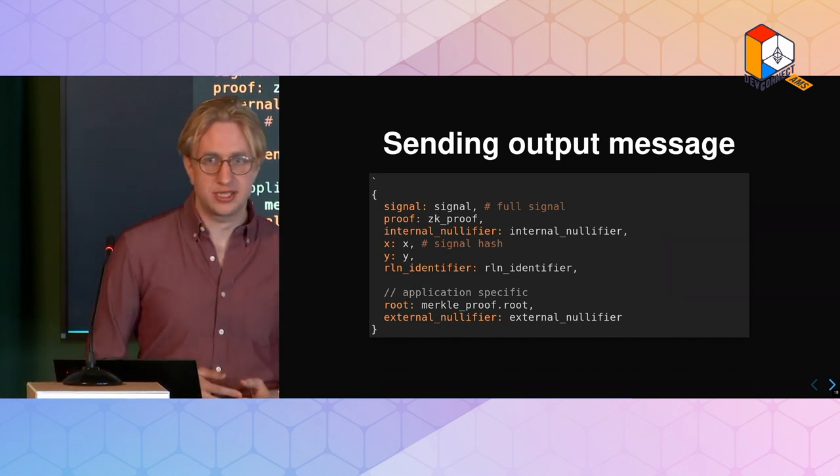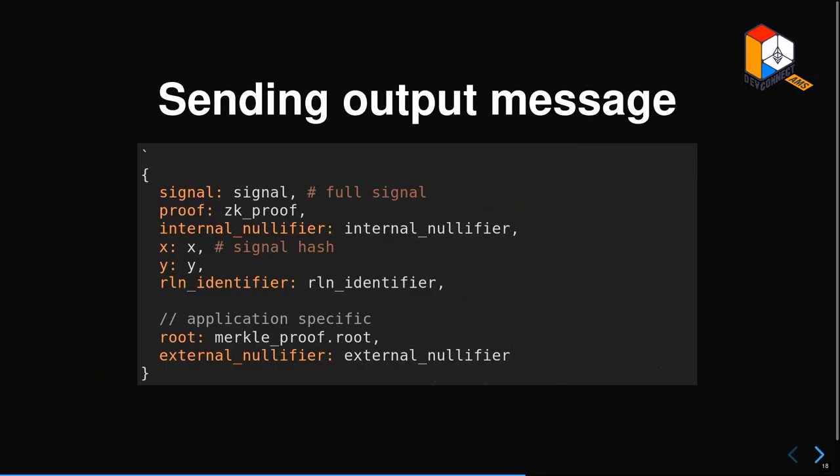The actual output message - what you're actually sending - includes the signal itself (the thing you're communicating), the proof, the internal nullifier (the fingerprint), the signal hash, the y value (the public output for Shamir's secret sharing), the RLN identifier, the Merkle proof root, and the external nullifier or epoch.